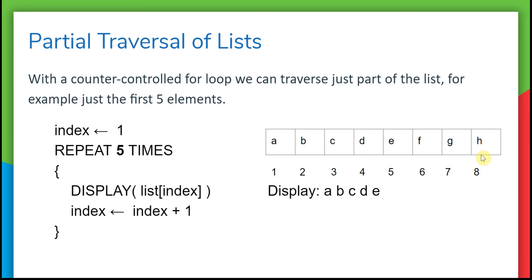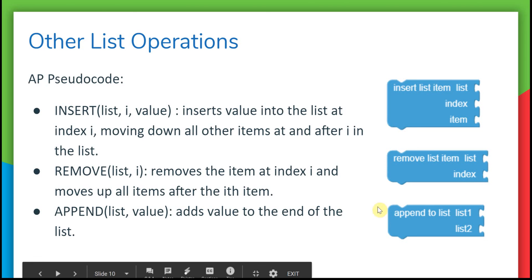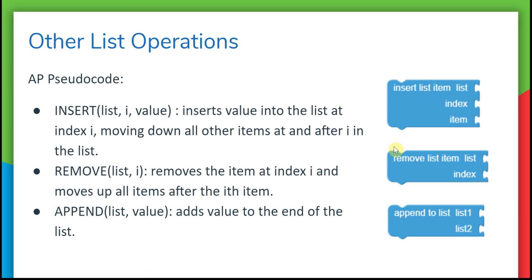There are also other list operations that exist both in AP Pseudocode and in App Inventor. There's insert to the list at index i, remove from the list a certain item at index i, or append to the list another value. You can see that these are very parallel to the App Inventor blocks. There's a lot of different list blocks; you should look through them and you might find some of them useful.